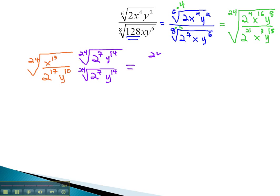we now have in the numerator a 24th root of 2 to the 7th, which is 128, x to the 13th, y to the 14th. In the denominator, we have 2 to the 24th, under a 24th root, is just 2,